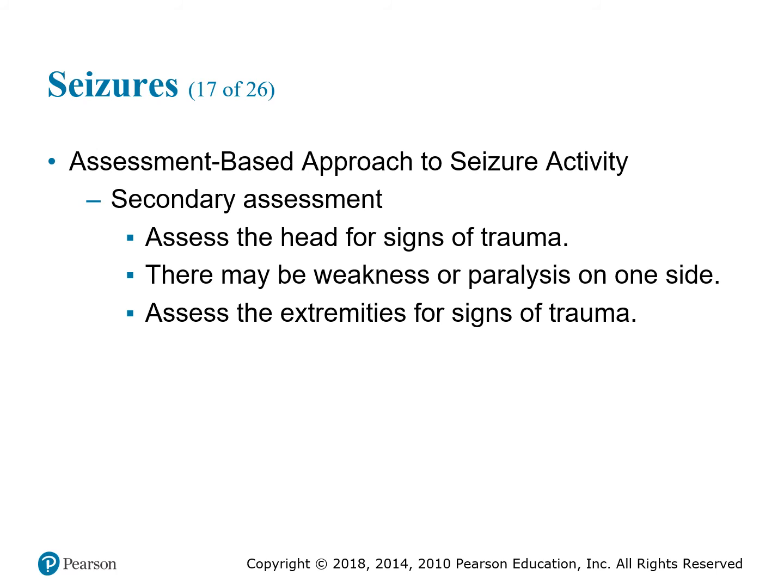For the secondary assessment, do a good thorough assessment to find a secondary cause for the seizure. Look for signs of trauma. Look for medical alert tags — a patient may not have epilepsy but may have a tag for diabetes, and blood sugar abnormalities could be causing the seizure. Do a good neurological assessment: Cincinnati pre-hospital stroke scale, facial drift, arm drift, speech — all things you'll assess on these patients.